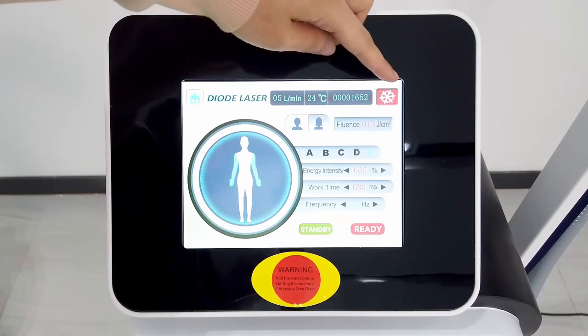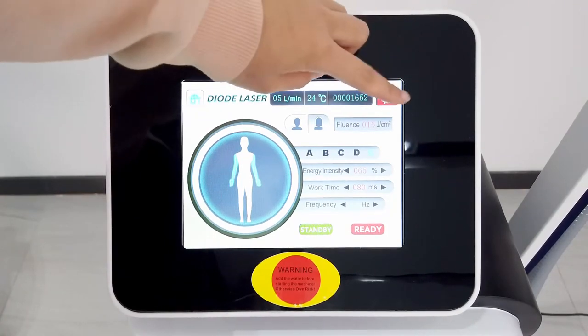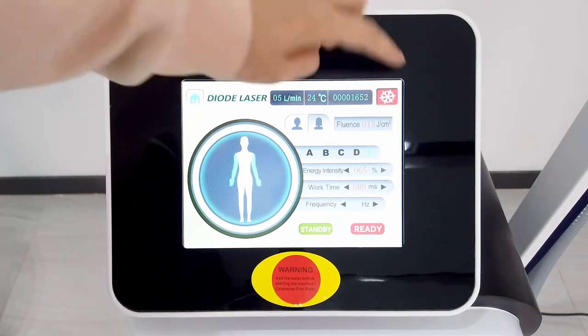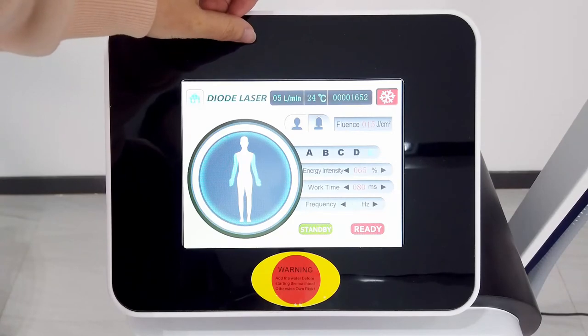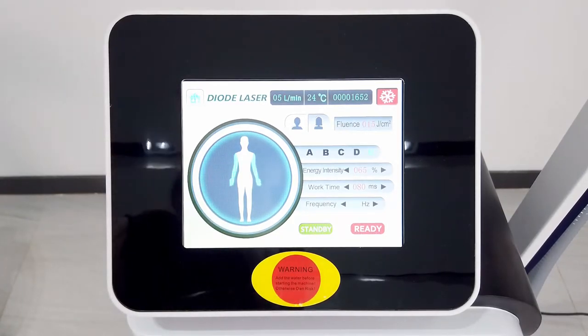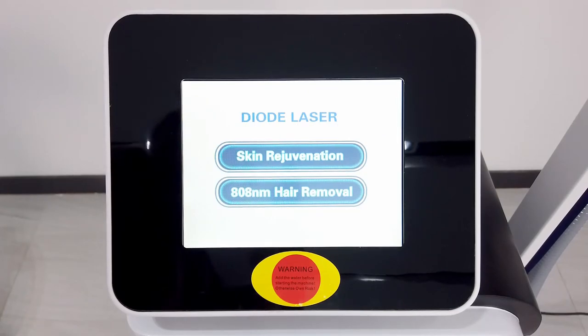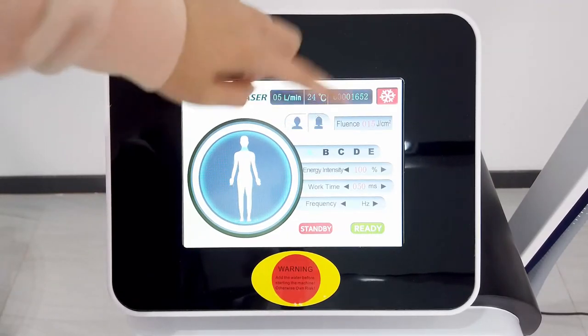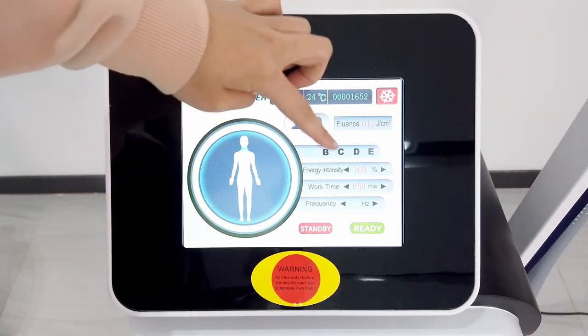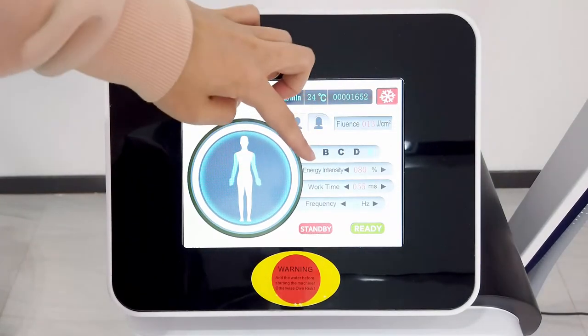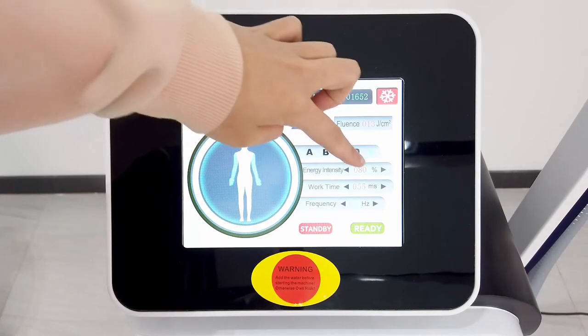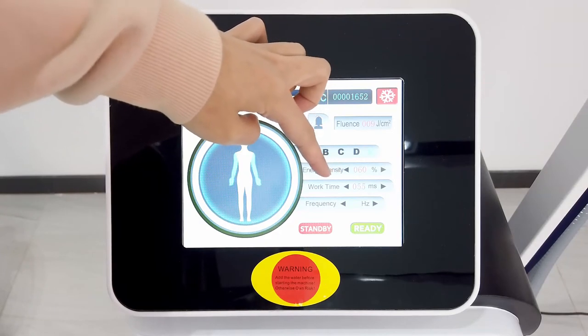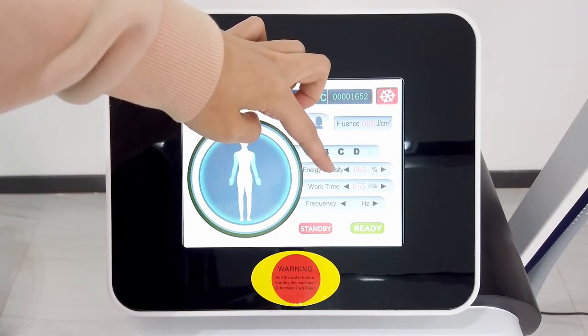And here is the cooling system. When we turn it on, the handle will be in the cooling state. When we turn it off, it will be at normal temperature. Now we'll check the skin rejuvenation system. It also has two modes, man and woman, and here are the body parts. And here is the energy. We can set it to 60, and the working time.